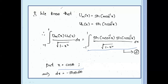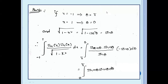We use the same substitution: x equal to cos θ, so dx equal to minus sin θ dθ. The limits are the same: if x equal to minus 1, θ equals π; if x equal to 1, θ equals 0. And root(1 minus x squared) equals sin θ.